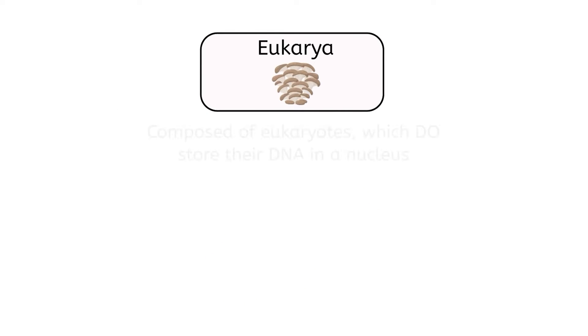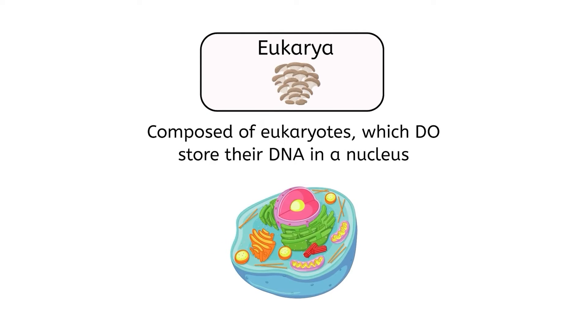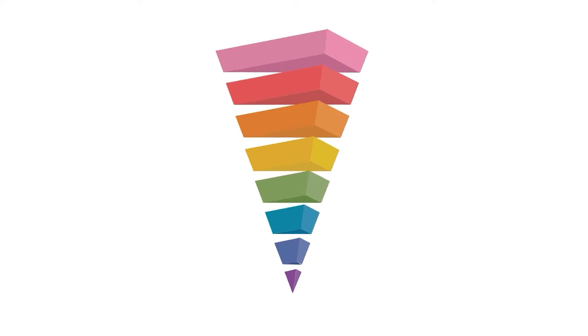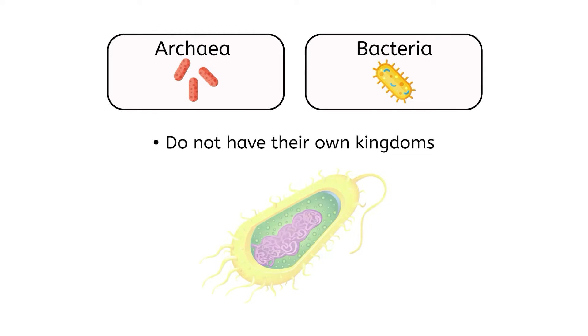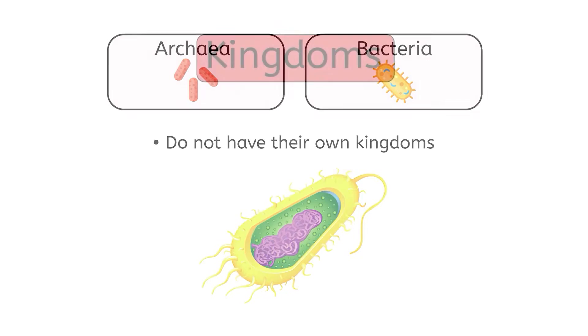Meanwhile, the domain eukarya is composed of eukaryotes, which do store their DNA in a nucleus and are typically much more complex life forms than prokaryotes. Continuing along our funnel, our next stop is kingdoms. Archaea and bacteria don't have their own kingdoms because their structure is very simple. Eukarya, however, includes four kingdoms.